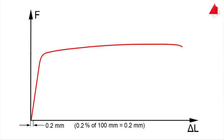For an initial gauge length of 100 millimeters, the result is 0.2 millimeters. In the force-elongation diagram, a straight line parallel to the elastic line is drawn through the offset point of 0.2 millimeters of elongation. The force at the intersection point of the offset line with the force-elongation diagram is designated as Fp0.2.